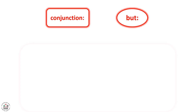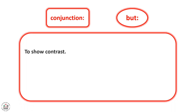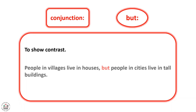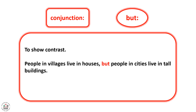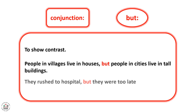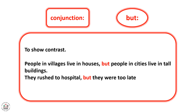We use 'but' to show contrast. For example: People in villages live in houses, but people in cities live in tall buildings. They rushed to the hospital, but they were too late.